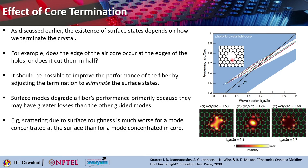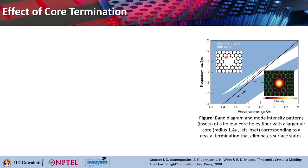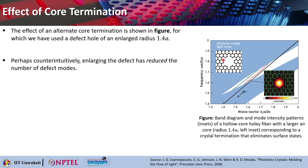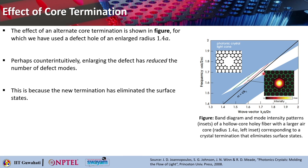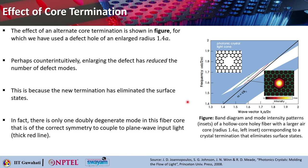It is basically following the boundary of the air holes, but in this case it actually cuts open all the air holes in the periphery. Perhaps counter-intuitively, enlarging this defect has reduced the number of defect modes. If you do the band gap analysis for this particular fiber, you will see that there are only two modes appearing here. The surface mode does not appear in this case.